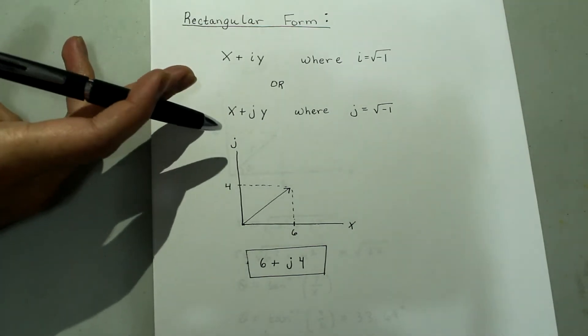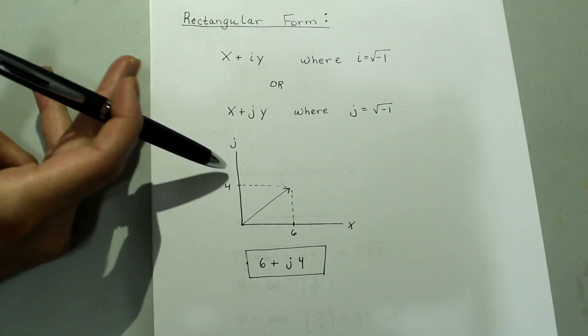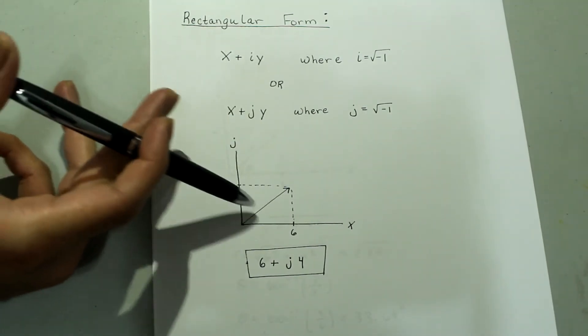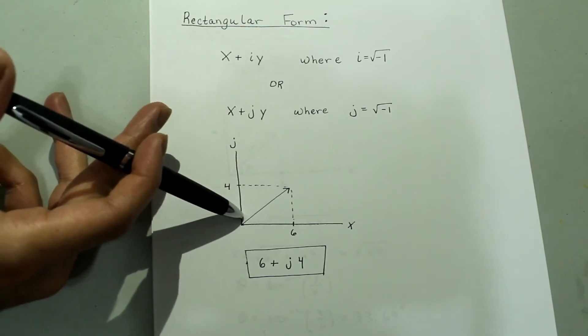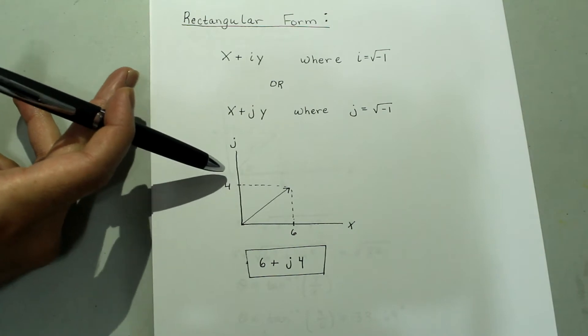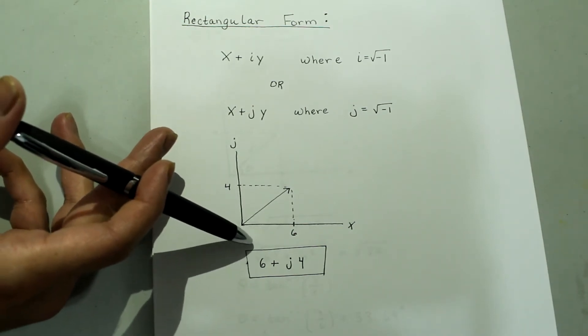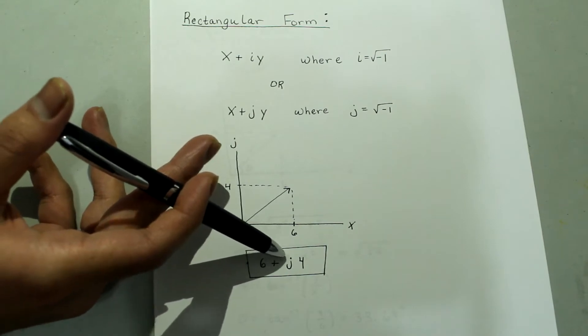And if you were to graph it, this would be your imaginary axis, and this would be your x-axis. So the coordinate here corresponds to the y-coordinate, so for instance, this right here goes 6 units along the x and 4 units up along the imaginary axis.